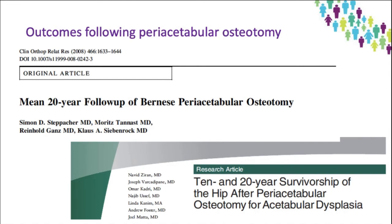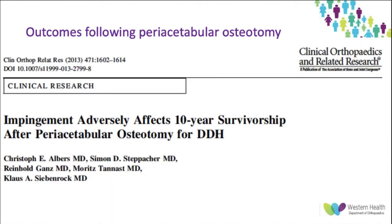Studies have shown good long-term outcomes following periacetabular osteotomies, with native hip survivorship up to 86% at 10 years and 60% at 20 years. It's worth noting the importance of assessing impingement in these patients, as unaddressed impingement adversely affects survivorship potential. Addressing impingement by creating a spherical femoral head in addition to acetabular reorientation does improve long-term survivorship post-PAO and decelerates the progression to osteoarthritis.